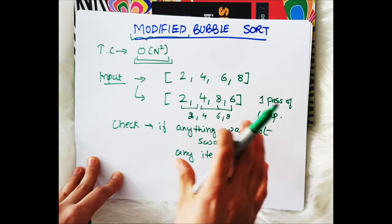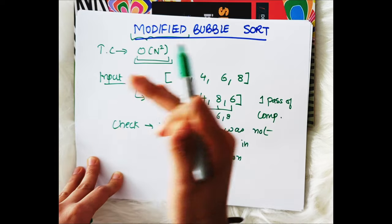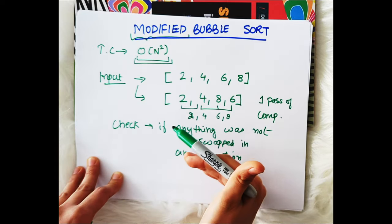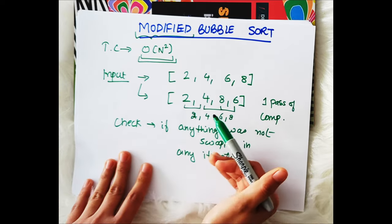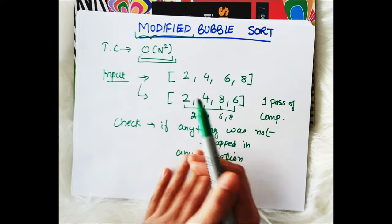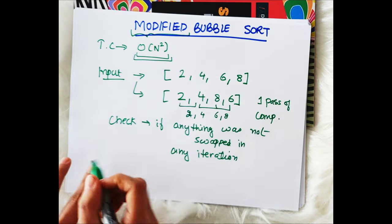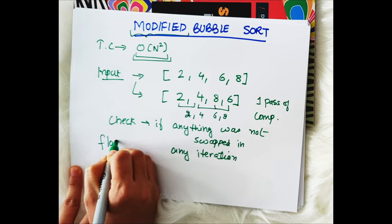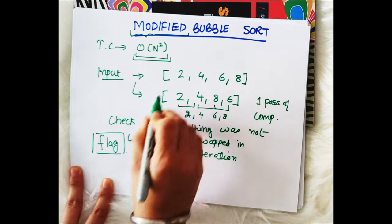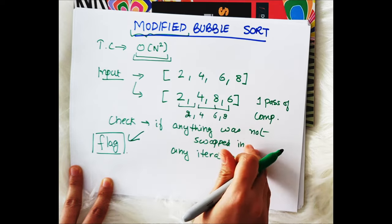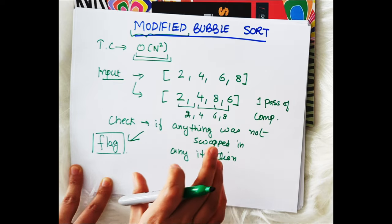So if our array is sorted, that means we do not need to do any further iterations, we can stop then and there itself. So here this is what modified bubble sort does. What we do is we just put one flag which tells us if anything was swapped or not, and if nothing is swapped we stop there itself, return the array that we are having so far.